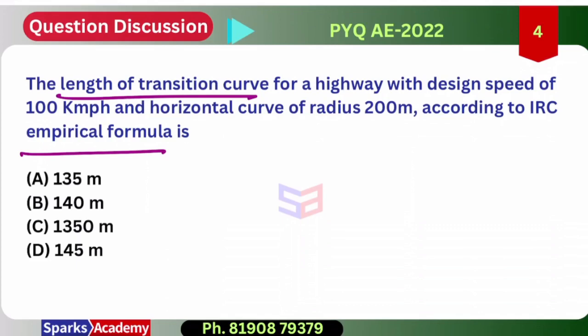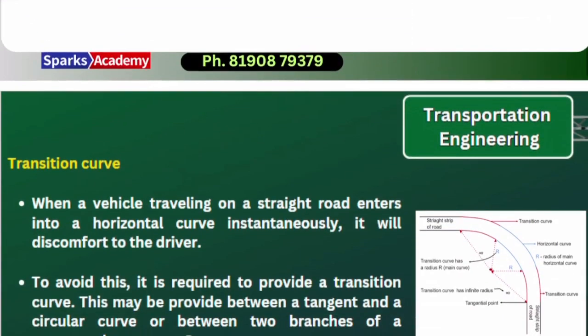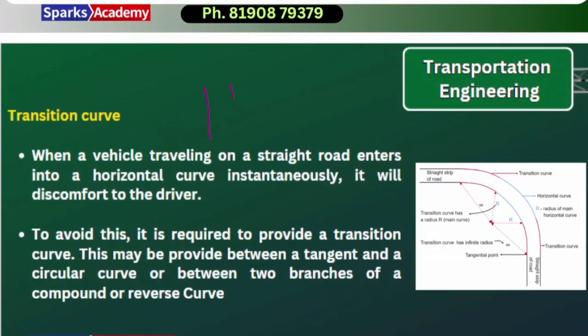The transition curve is a directional curve. Once a driver on a straight road is going to travel and then needs to change the direction of travel, we use a horizontal curve. If you have a circular curve, basic physics tells us that an object traveling in a circular path at a certain speed will have a centrifugal force acting on that object outwards.